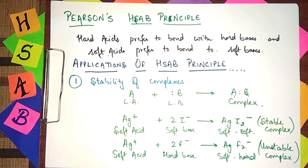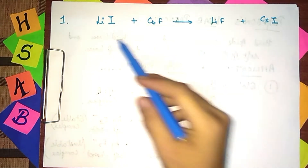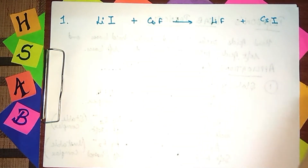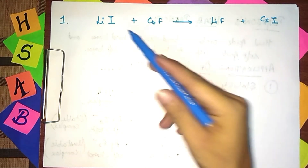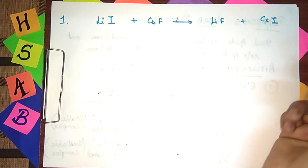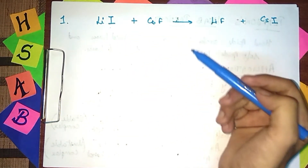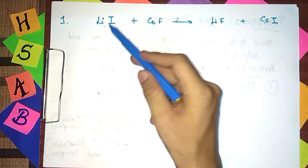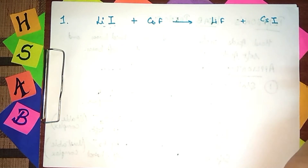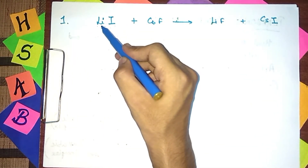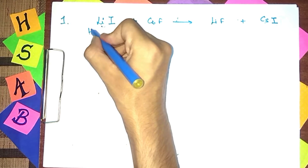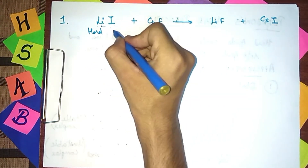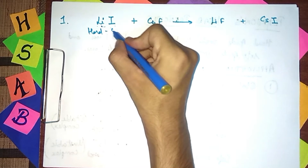Now based on this principle, we have some questions. The question asks: will this reaction be feasible according to Pearson's HSAB principle? First, we check which species are hard and which are soft. If we have unstable compounds in our reactants, that is favorable for us. Iodide is a soft base because it is a less electronegative ion.